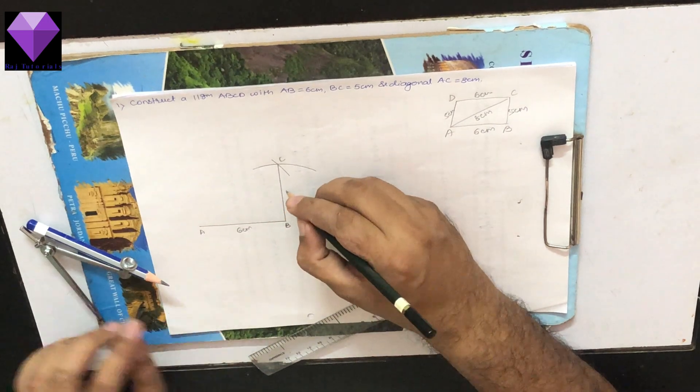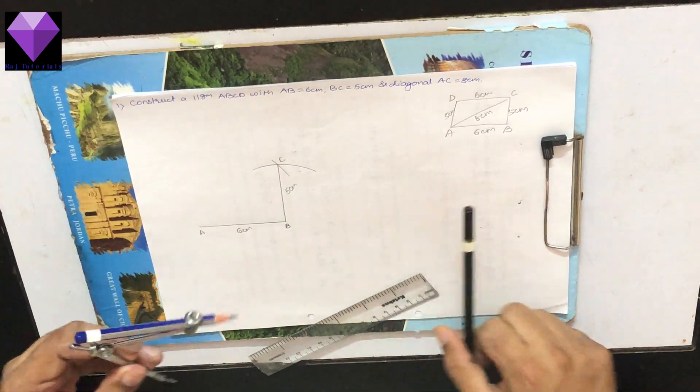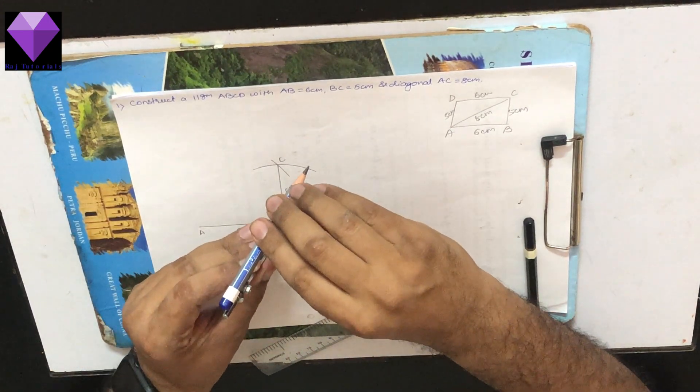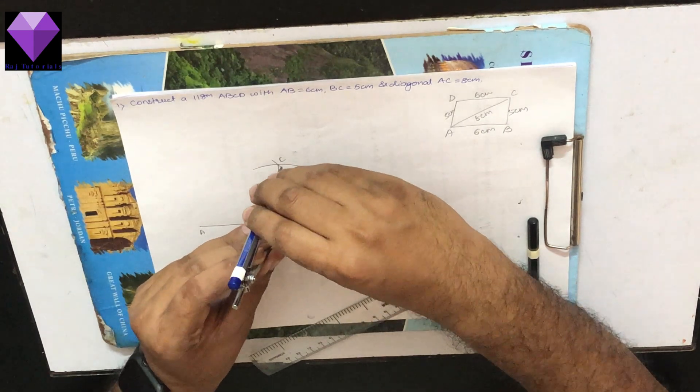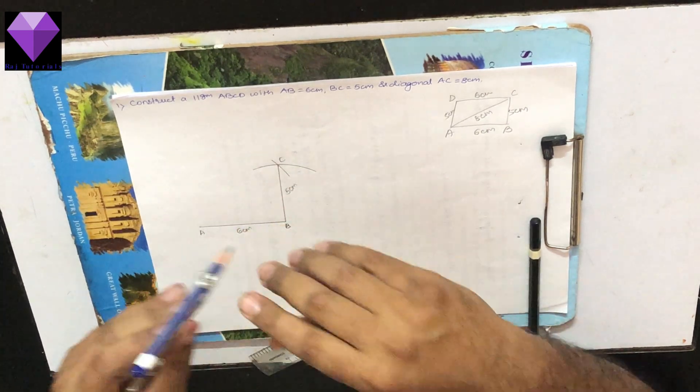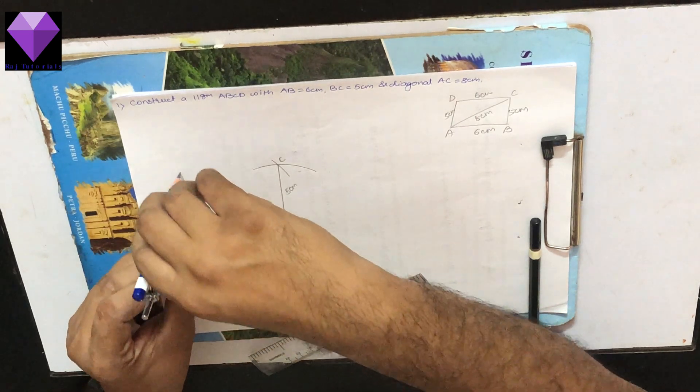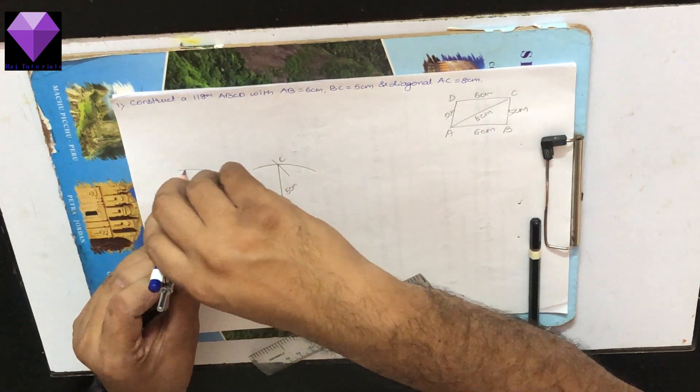Now, BC is 5 cm, so AD also should be 5 cm. Again I am measuring BC and I am cutting out an arc from A.